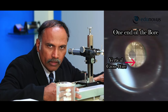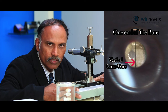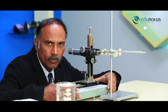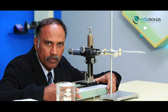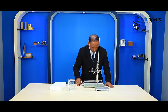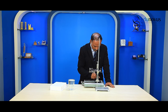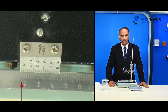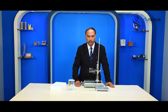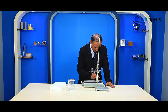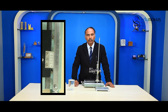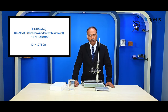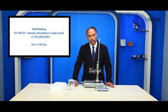You can clearly see that the vertical cross wire touches one end of the bore of the capillary tube. Now we note down the horizontal scale reading. The main scale reading is 1.75 centimeters and the vernier coincidence is the 25th division. Therefore, the total reading is 1.775 centimeters. Note this reading as D1.